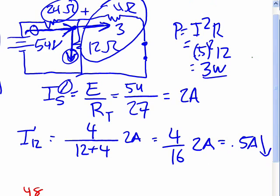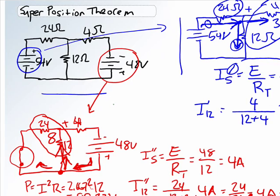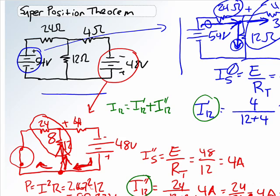Now we've got a point where we've got to unify everything. The current, the real current, according to the superposition theorem is the algebraic sum of that induced by the 54 volt source, which is I single prime 12 plus I double prime 12, which was this guy over here.